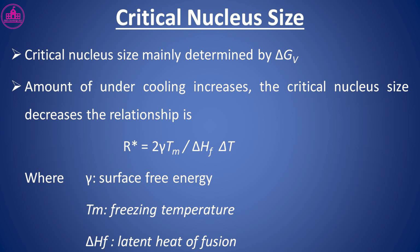Critical nucleus size is mainly determined by ΔG. As the amount of undercooling increases, the critical nucleus size decreases. The relationship is R = 2γTm / (HF · ΔT), where γ is the surface free energy, Tm is the freezing temperature, and HF is the latent heat of fusion.